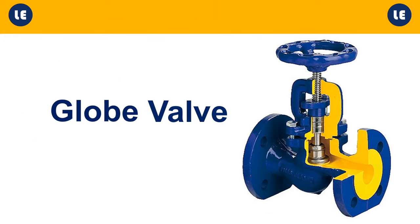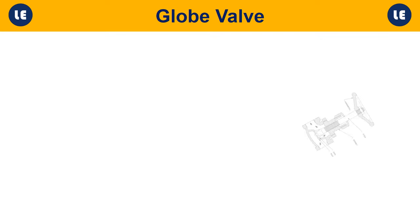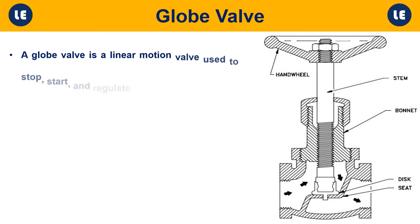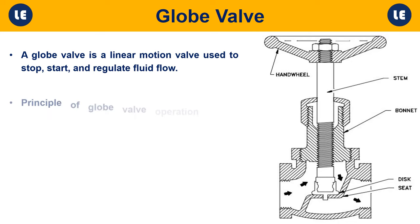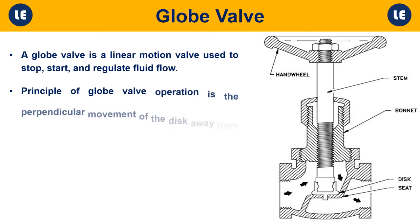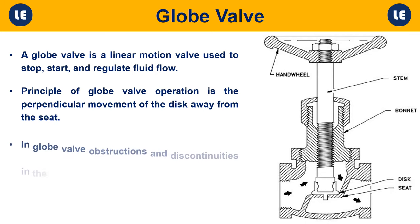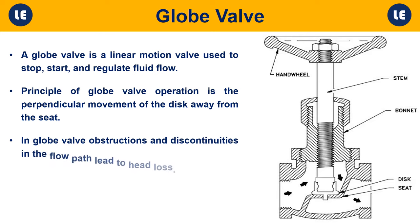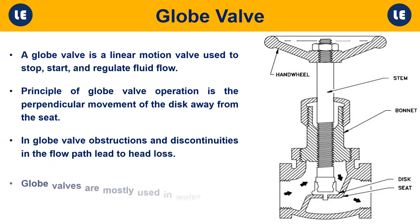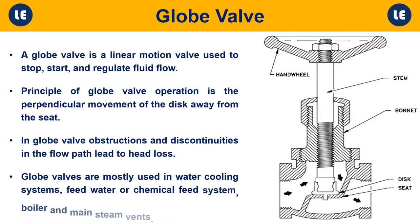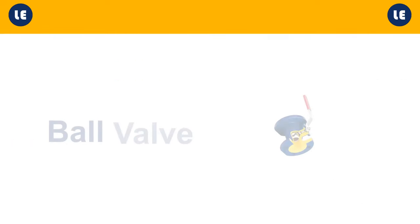Globe valve: A globe valve is a linear motion valve used to stop, start, and regulate fluid flow. The principle of globe valve operation is the perpendicular movement of the disc away from the seat. Obstructions and discontinuities in the flow path lead to head loss. Globe valves are mostly used in water cooling systems, feed water or chemical feed systems, and boiler and main steam vents.